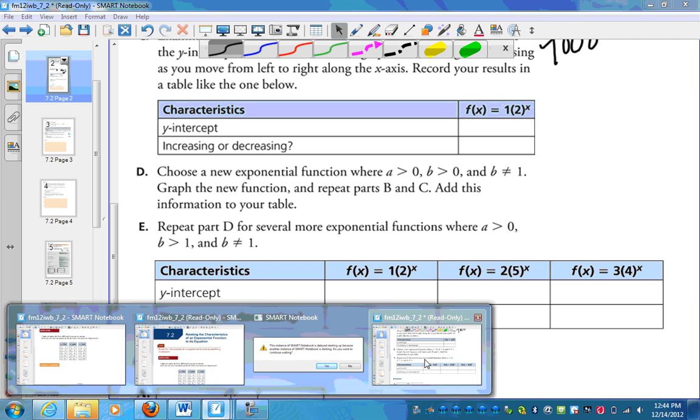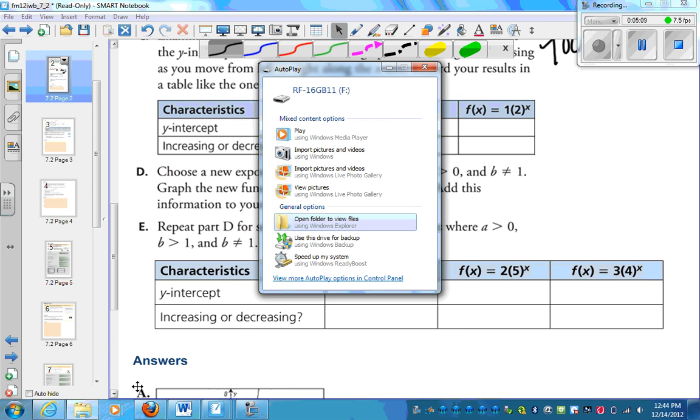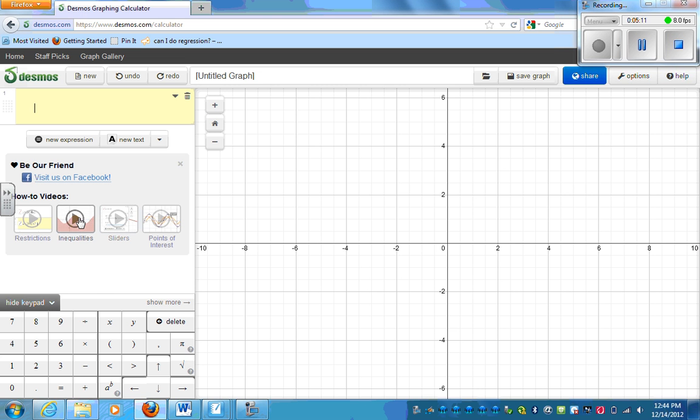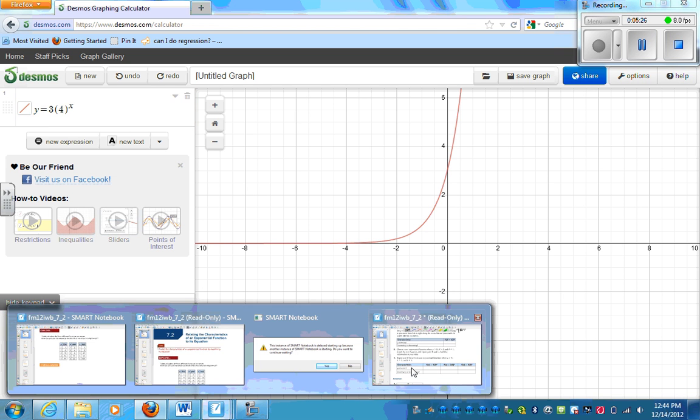Here we have 2 to the power of x. Notice it is an increasing function and its y-intercept is 2, or that value that's given right there. The next thing it asks us to graph is 3 times 4 to the power of x. So some of you might see a pattern already. You might guess what the y-intercept is. Look, that y-intercept is 3, and as well it is increasing. So we're seeing some patterns.